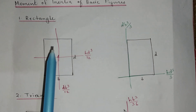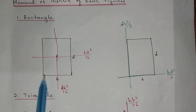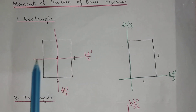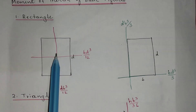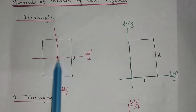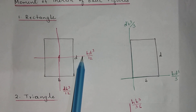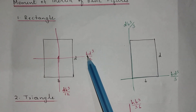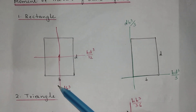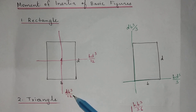First we have the rectangle. The base is B, the depth is D, and with a red pen I have marked the centroidal axis. This is the centroid, this is the centroidal Y axis, and this is the centroidal X axis. About the X axis, the moment of inertia value for this rectangle is BD cube by 12. About the Y axis, the moment of inertia value is DB cube by 12.